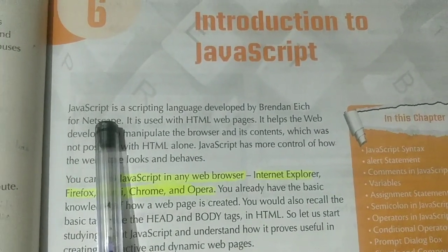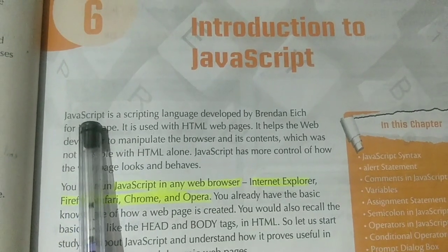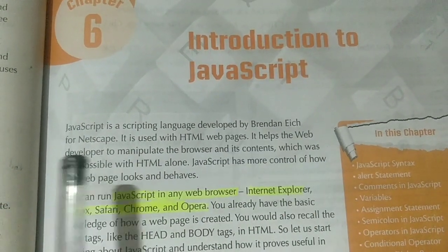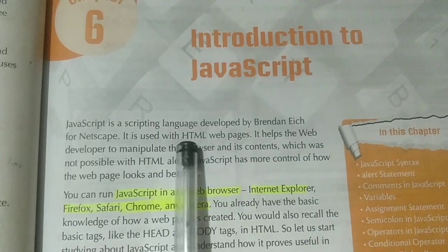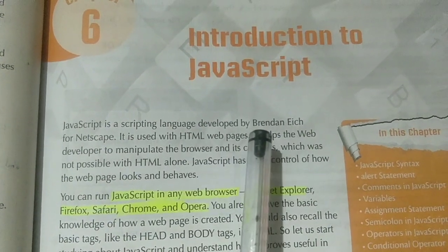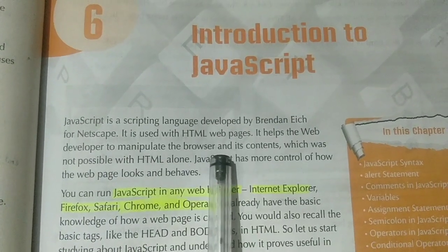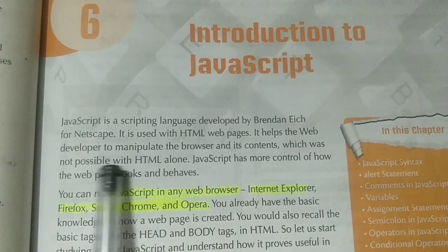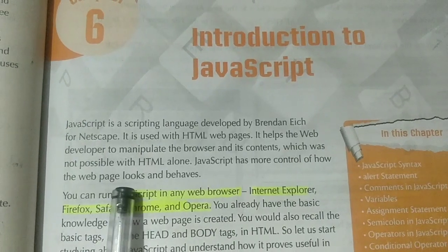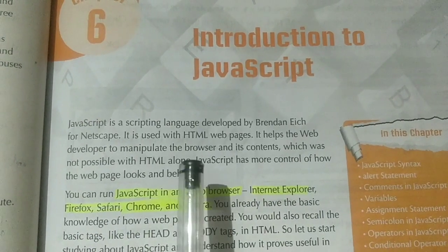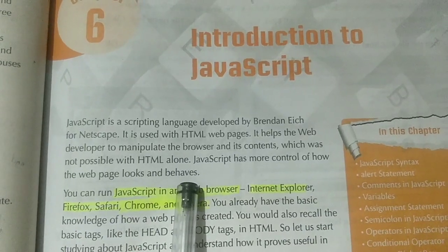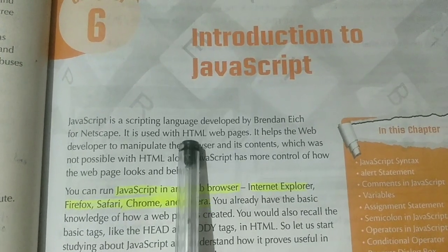Before starting the chapter, we should know what is JavaScript. JavaScript is a scripting language developed by Brendan Eich for Netscape. It is used with HTML web pages — it is not used alone. It is used with HTML web pages to help web developers manipulate the browser and its content, which was not possible with HTML alone. JavaScript has more control of how the web page looks and behaves, and that's why JavaScript is used with HTML.